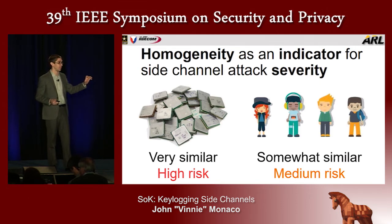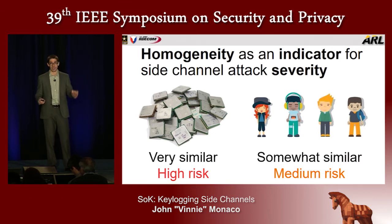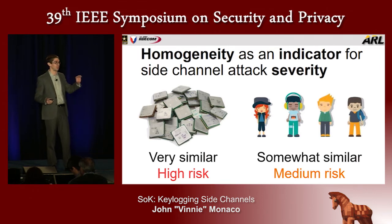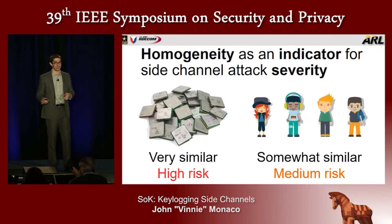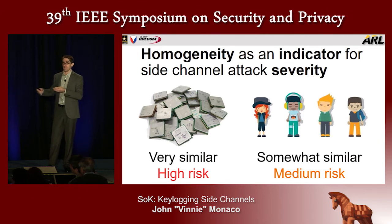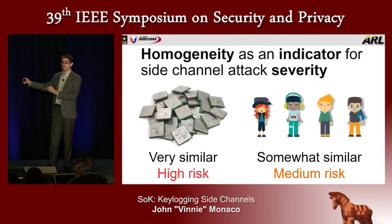This diversity is what enables biometric identification, but to an extent it's also what accounts for that range in performance in our temporal keylogging attack, where the attack works well for some users but not others. Not everyone's a touch typist — we have hunt-and-peckers and combinations of different typing styles. So the side channel attack targeting user behavior may exhibit this range in performance. To an extent, similarity in behavior among a population is an indication of how vulnerable that population is to a side channel attack.